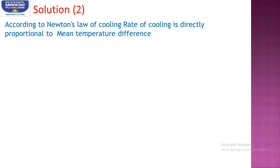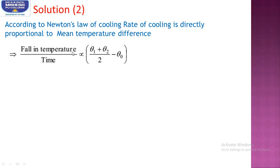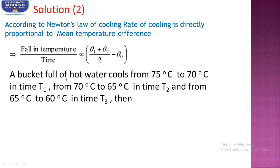According to Newton's law of cooling, the rate of cooling is directly proportional to the mean temperature difference. So, the fall in temperature divided by time is directly proportional to the mean temperature minus the surrounding temperature. In the question, the temperature drops from 75 to 70, 70 to 65, and 65 to 60 — in every case there is a 5°C difference, but we do not know how much time each takes.